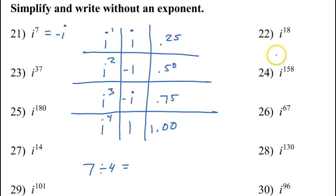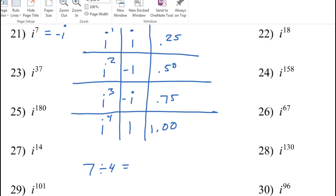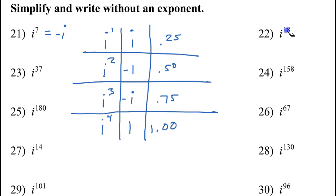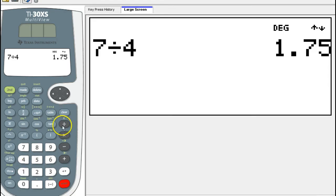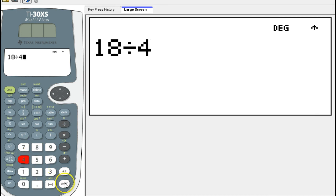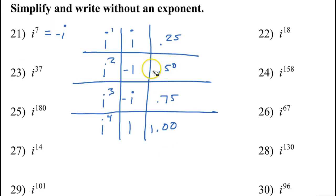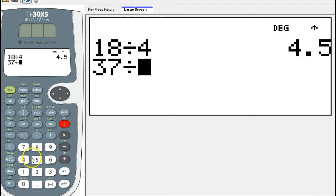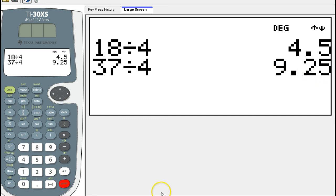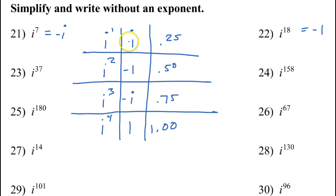Look at i to the 18th power: 18 divided by 4 is 4.5. See the .5? That corresponds to negative 1 on the chart, so the answer is negative 1. How about i to the 37th power? 37 divided by 4 is 9.25. The .25 tells me the answer is i. So i to the 37th power equals i.